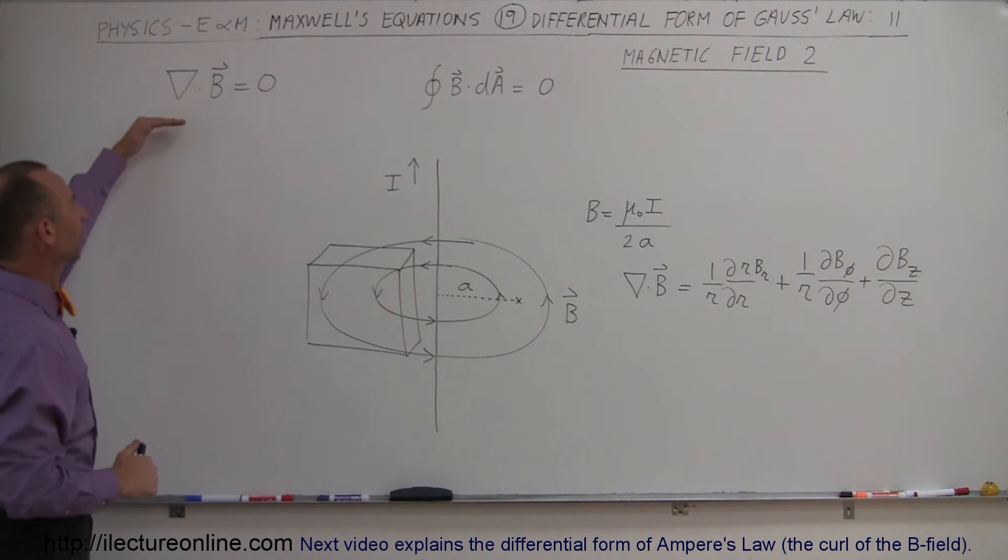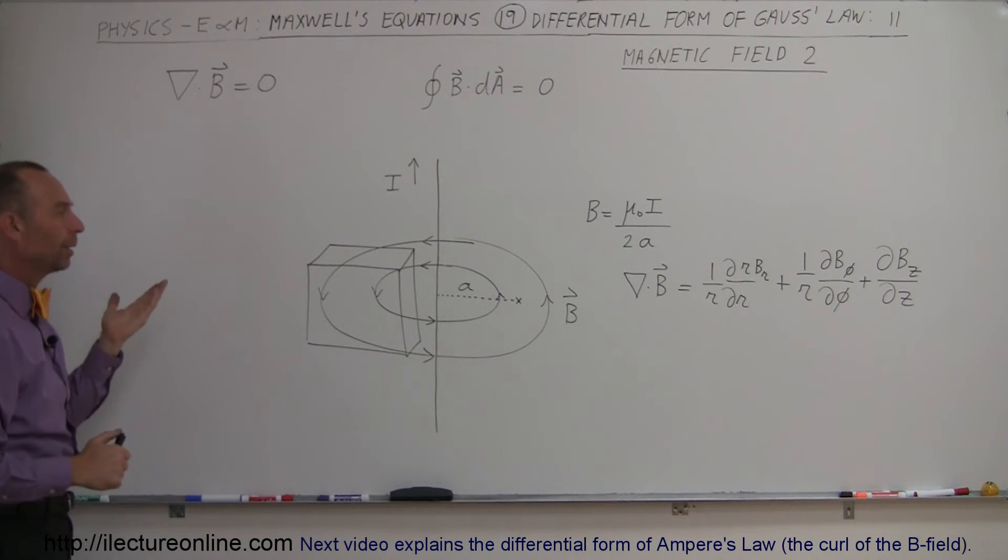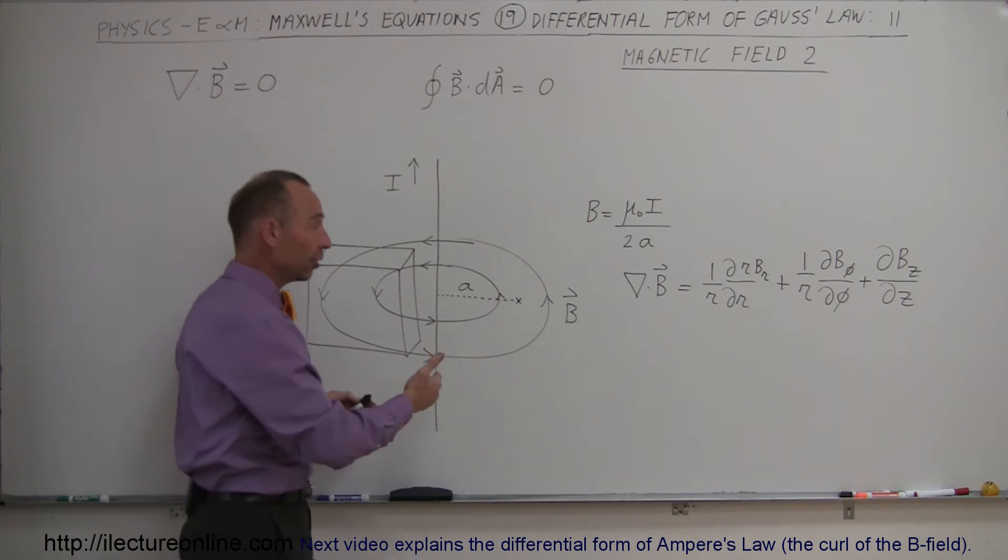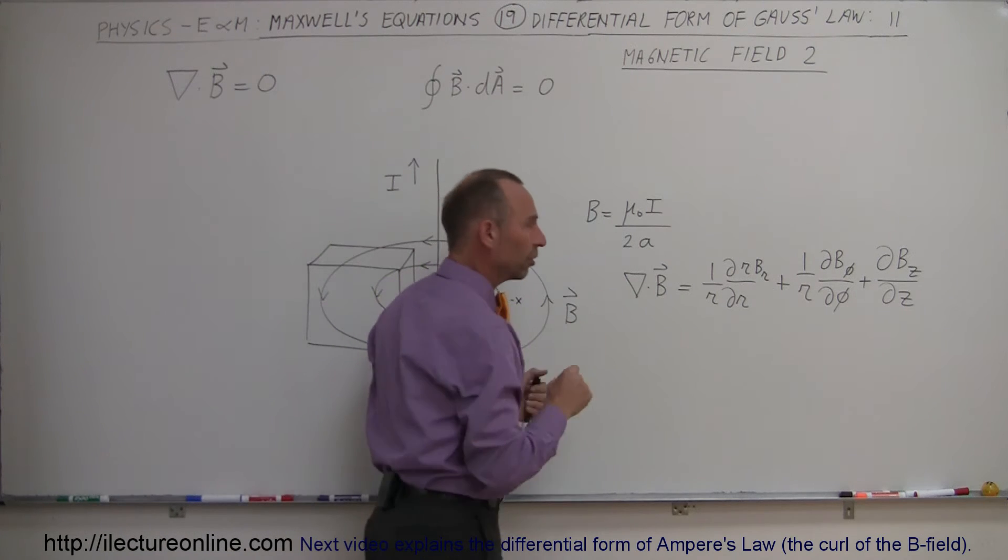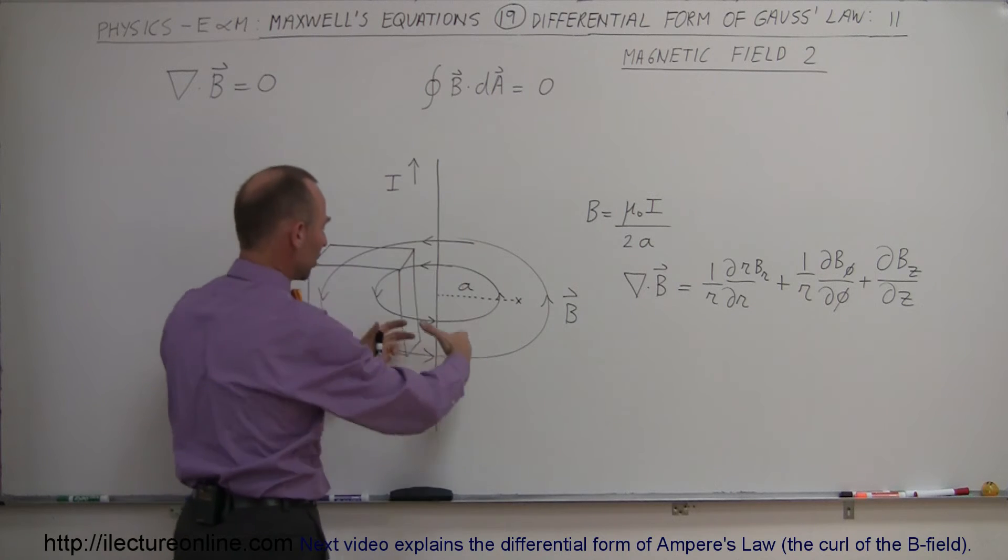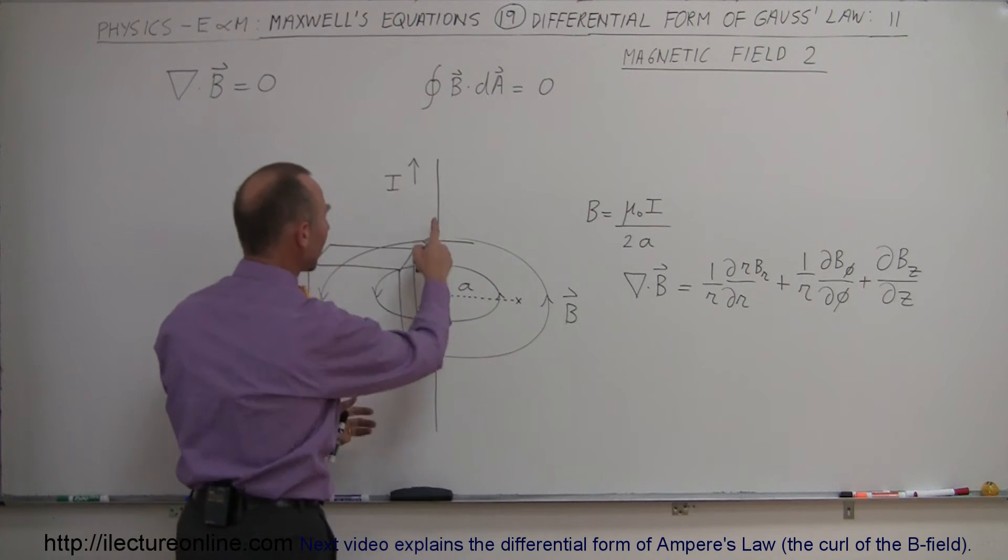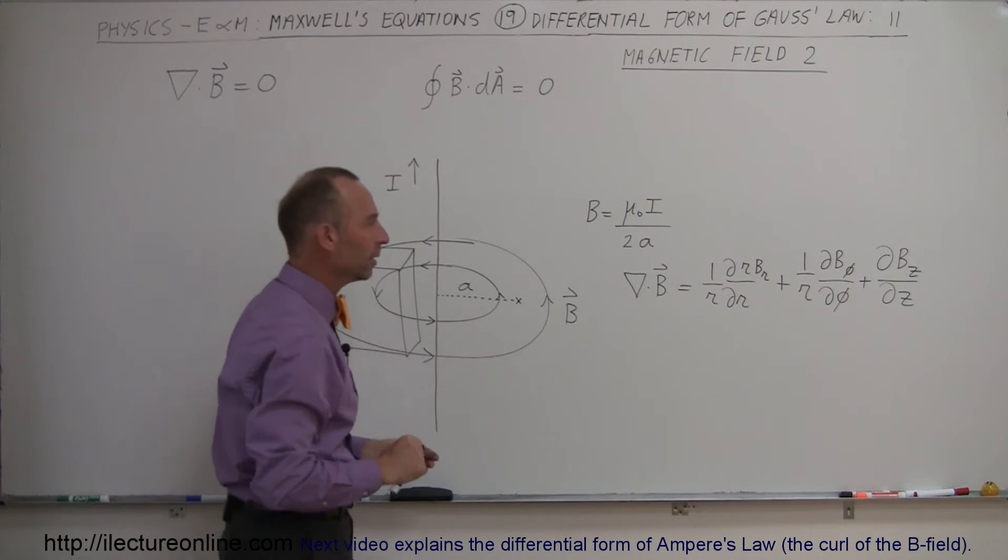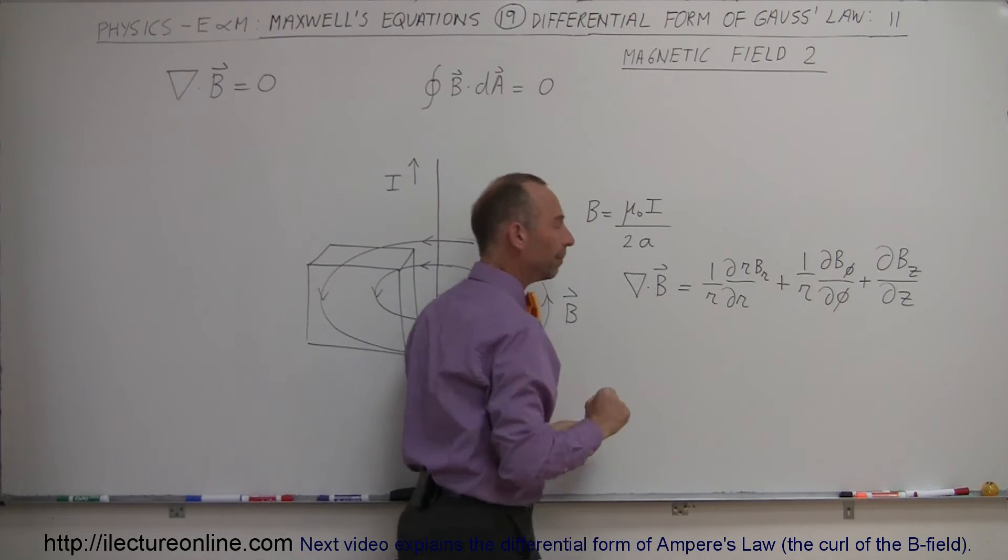But how does that compare to the differential form? Well one way to do it is simply take the divergence in cylindrical coordinates, because you can take this as a cylinder with the B field forming a cylinder around the current right here, around the wire, the divergence equal to this equation right here.